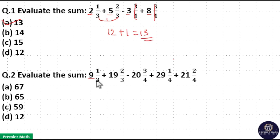Same way here, add the integers. 29 plus 21 is equal to 50, and here minus 20 plus 19 is minus 1. Minus 1 plus 9 is equal to 8.